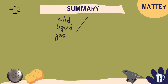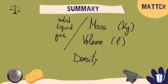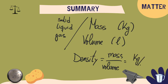And we know some characteristics of matter, which are the mass measured in grams or kilograms, the volume in liters, and the density, which we calculate by dividing mass by volume, giving us kilograms per liter.